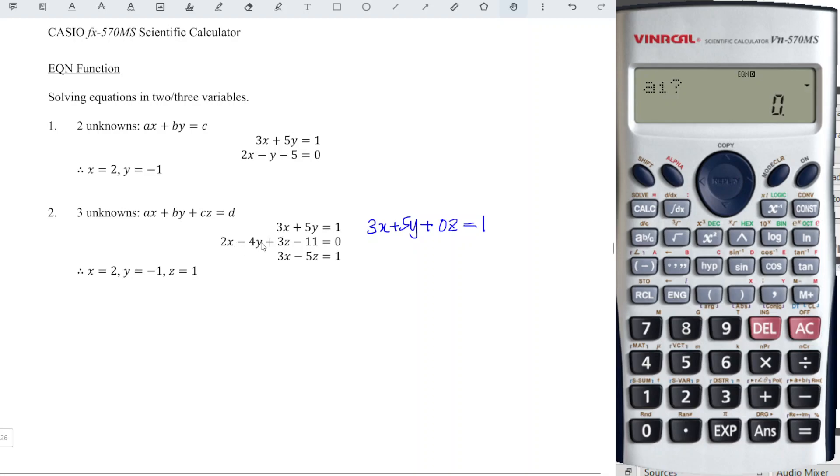For the second equation, we have 2x minus 4y plus 3z. Remember, constant must be on the right-hand side of the equation. So which means that we have to bring minus 11 to the right, which is positive 11. And for the last equation, we have 3x or plus 0y. Since it's 0, we put plus or minus, doesn't matter, not important. So minus 5z is equal to 1.